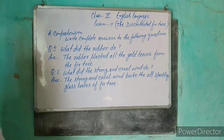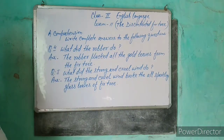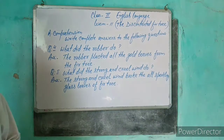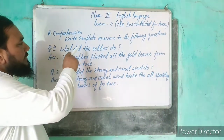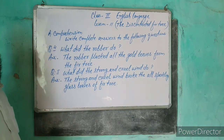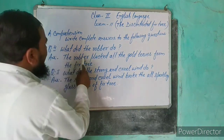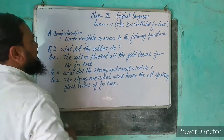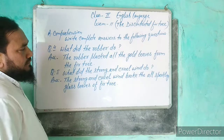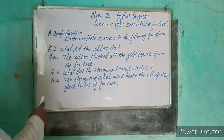बच्चों, हम लोग ने Question number 3 तक देखा। ये Question number 4 देखिए: What did the robber do? Robber ने क्या किया? डाकू ने क्या किया? हम लोग ने पढ़ा था कि डाकू ने fir tree का जो सोने की पत्ती थी, उसे तोड़ लिया। तो इसका answer लिखेंगे: The robber plucked all the gold leaves from the fir tree। मतलब डाकू ने fir tree के सारे सोने की पत्तियों को तोड़ लिया।